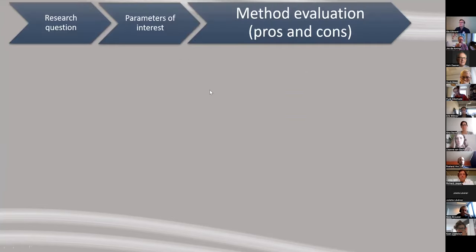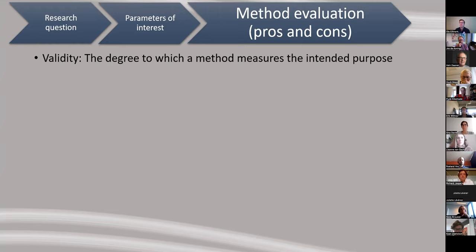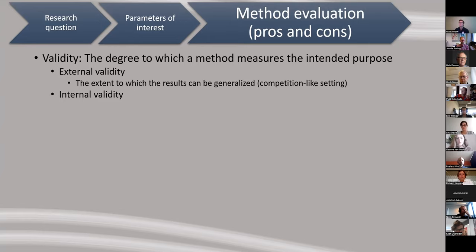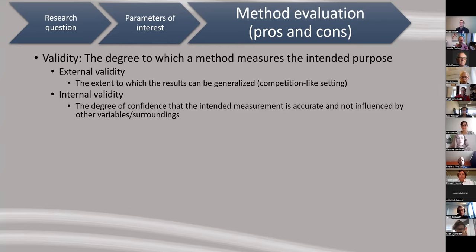When evaluating methods, the first term to understand is validity — the degree to which a method measures its intended purpose. We separate this into external validity, which is the extent to which results can be generalized (in sport: how close are you to a competition setting), and internal validity, which is the degree to which the measurement is accurate and not influenced by other variables — typically higher in a controlled lab environment.